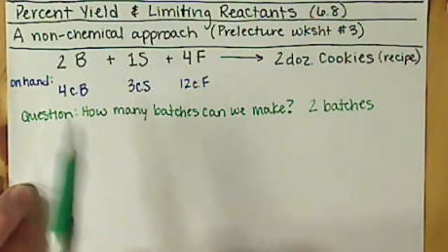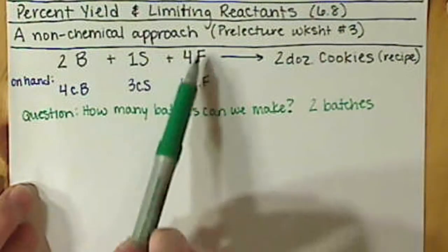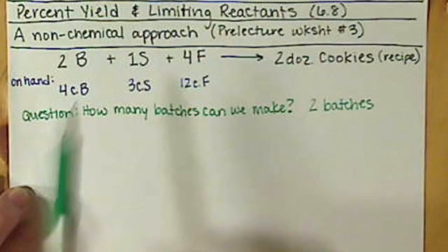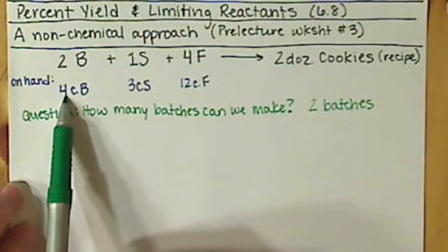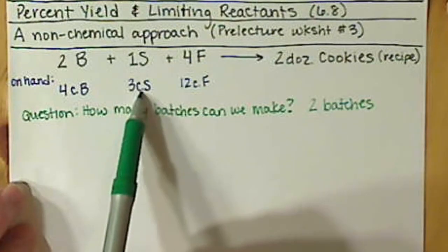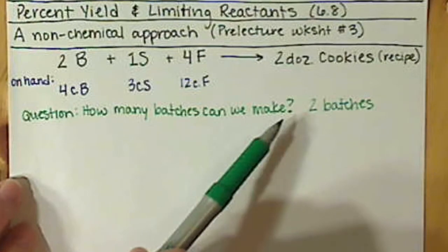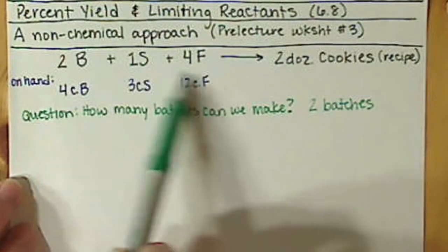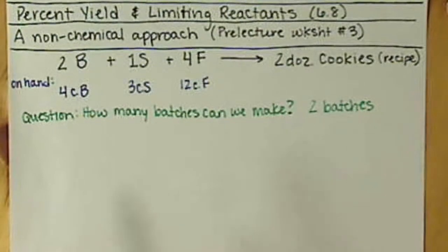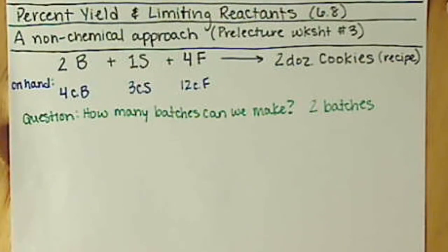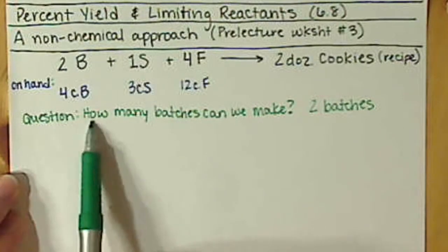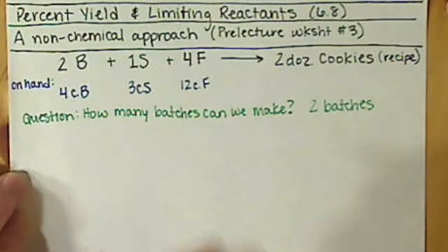How you probably looked at that is: I have four cups of butter, extra sugar, and extra flour. If we double the recipe, I'd need four cups of butter — I have exactly four. I'd need two cups of sugar — I have more than that. And I'd need eight cups of flour — I have more than that. So we can make two batches because we have enough of all three ingredients. We can't make three batches because we'd run out of butter, and you can't make these cookies without the appropriate ratio.